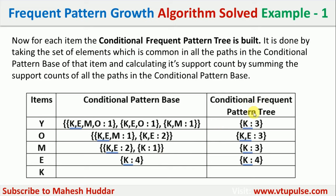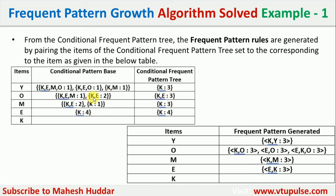Using the conditional frequent pattern trees, we write the frequent pattern rules. For item Y with conditional tree K, the rule is {K, Y} with frequency 3. For item O with conditional tree K, E, the rules are: {K, O}, {E, O}, and {K, E, O}, each with frequency 3. For M, the rule is {K, M} with frequency 3. For E, the rule is {K, E} with frequency 4.